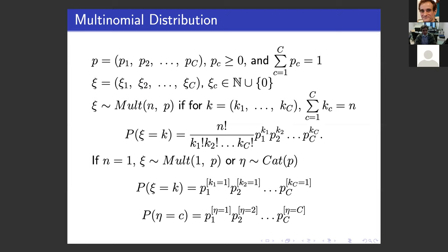We have n experiments and we have the probability vector p1, p2, and so on up to p_C. Then k is also a vector representing the outputs of our experiment. The probability that, where n and k are vectors with C capital coordinates, is given by the multinomial formula: the probability of having exact vector k after rolling the die n times, getting k1 ones, k2 twos, and so on.